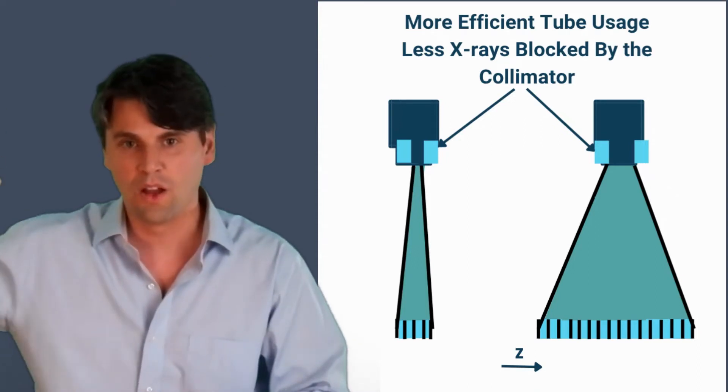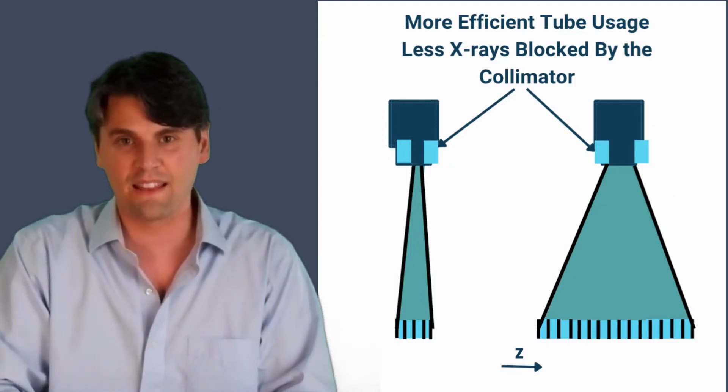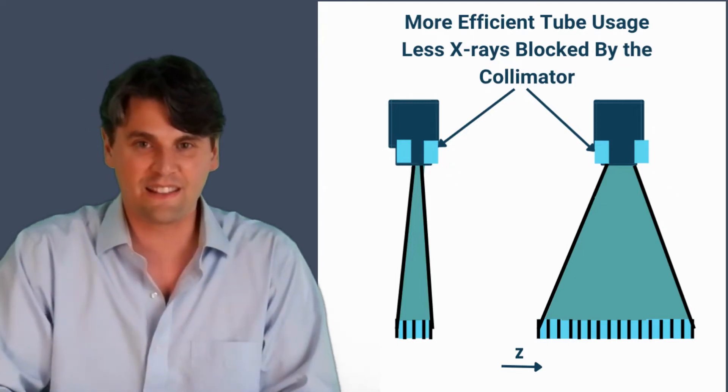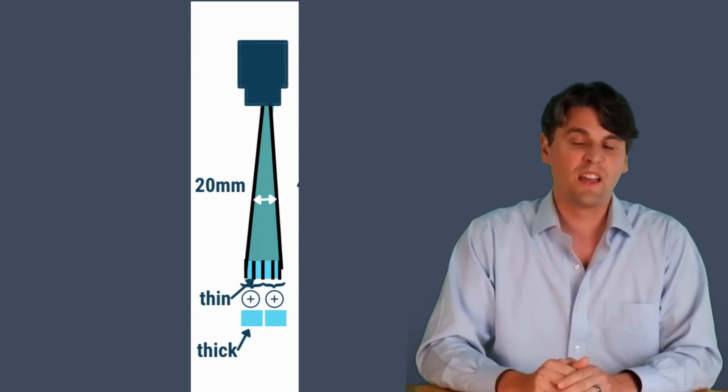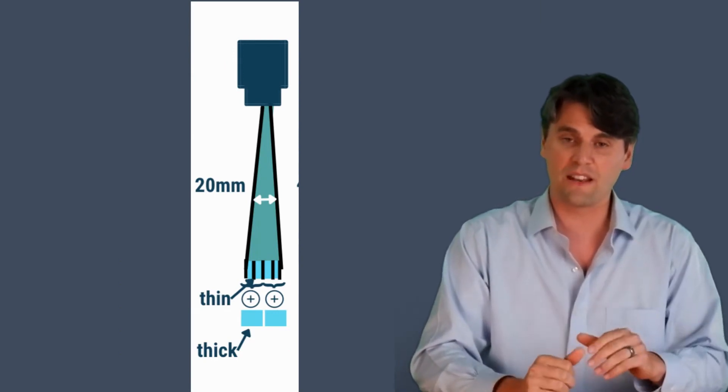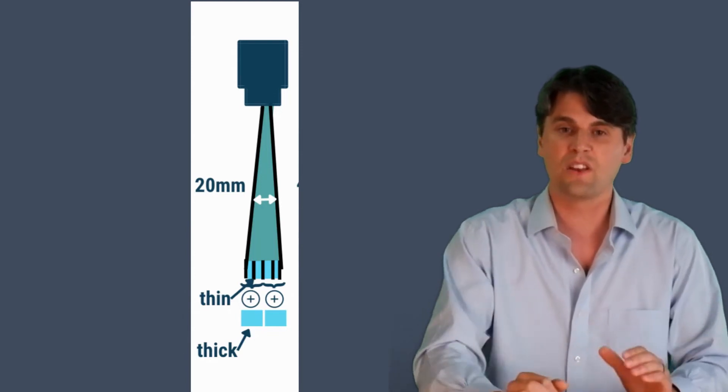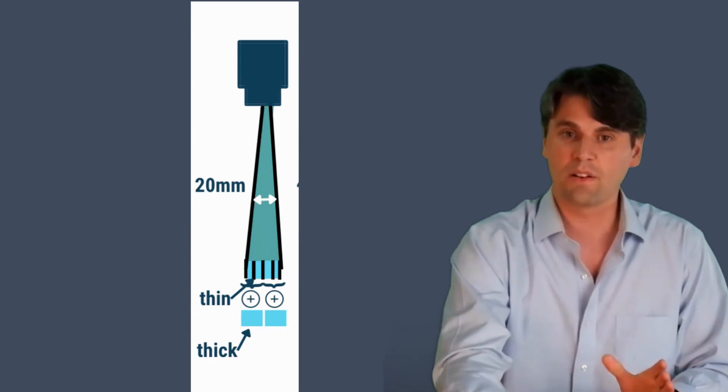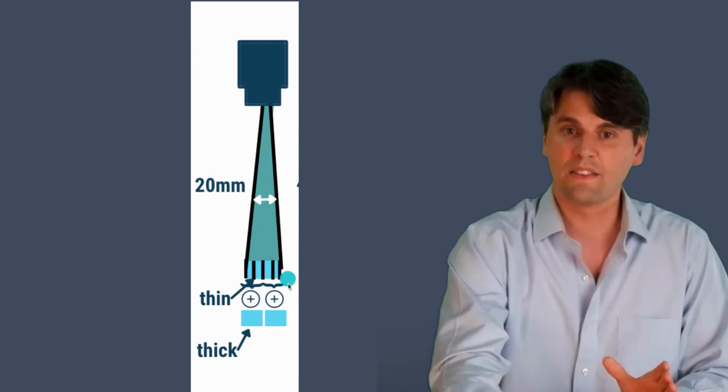This increase in efficiency actually allows you to complete more volumetric scans without overheating an x-ray tube. So on the systems, even though the slices are relatively thin so that we can generate those isotropic images, you can also generate thick images.